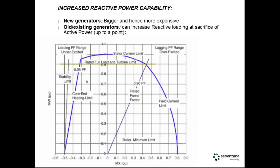In terms of increased reactive power capability: on new generators, in order to handle that, they're just going to have to be bigger — hence more expensive. For existing ones, you can increase your reactive loading, but you might have to sacrifice active power. From a standard capability diagram: this is importing VARs, exporting VARs, and this is your rated full load operating limit based on the turbine limit. If you're operating at rated power factor at maximum active power and someone asks you to go from 0.4 per unit to exporting 0.7 per unit megavars, you can do it, but in order to comply with the rotor heat limit you'll have to decrease power along the curve — by the time you get to 0.7 per unit VARs, you're sitting at 0.5 of your active power — a 50% power reduction.